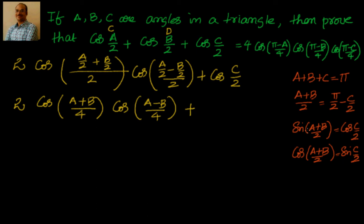Now cos(c/2) equals sin((a+b)/2). You may ask why we go for this. The approach is: apply the transformation on the first term, then manipulate the last one so that you can take something common out. Since cos((a+b)/4) is already present, if we write cos(c/2) as sin((a+b)/2), we can use the identity sin(2A) = 2·sin(A)·cos(A) to get cos((a+b)/4) again and take it as a common factor.